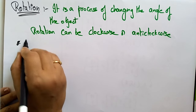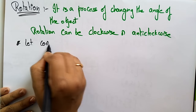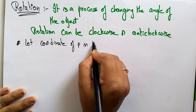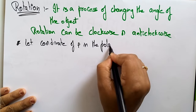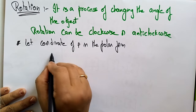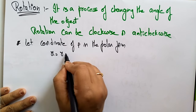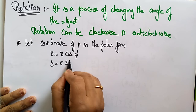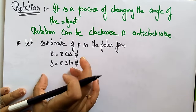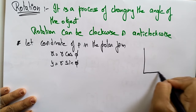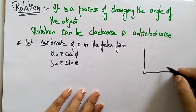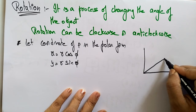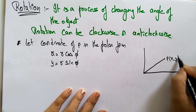Let's see how rotation will be done. Let the coordinate of point P be in polar form: x = r·cos(phi) and y = r·sin(phi). So these are the two coordinates x and y in the coordinate system, and the object P is at position P(x, y).